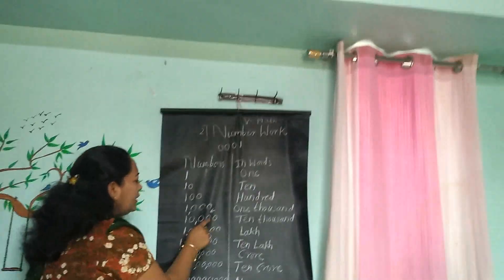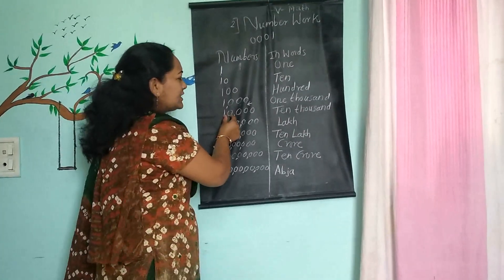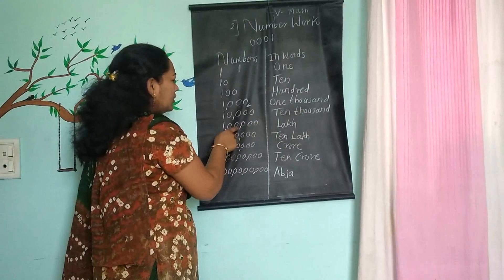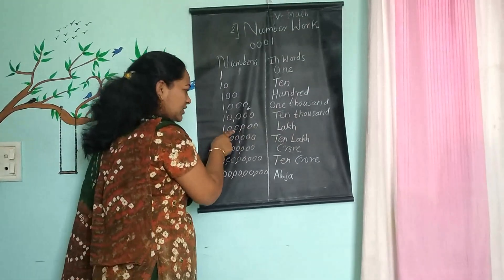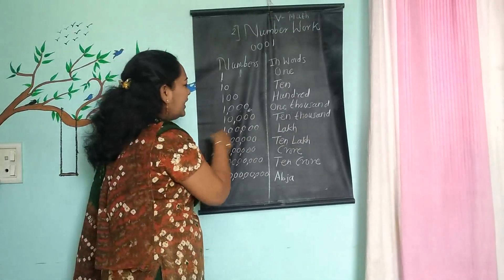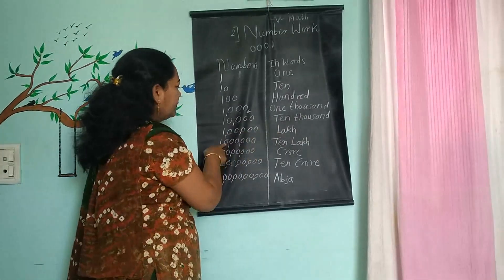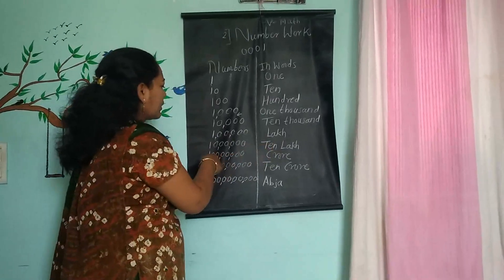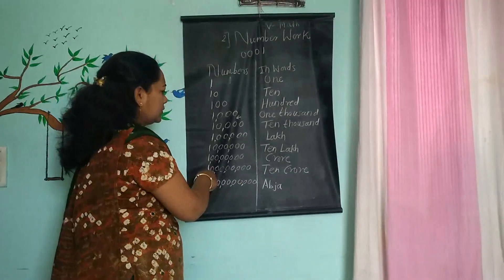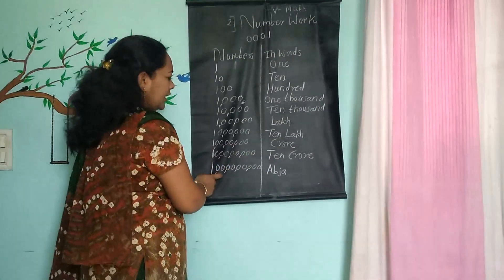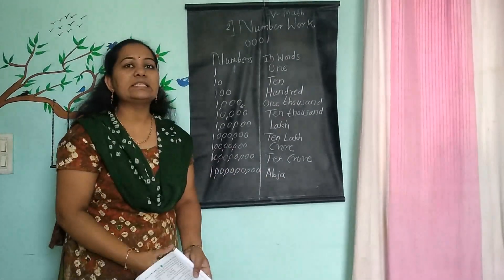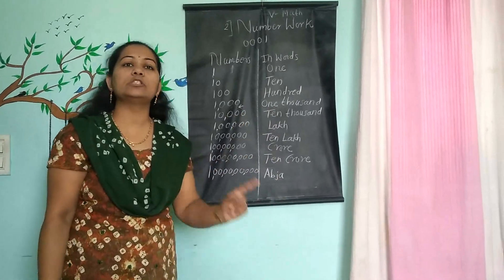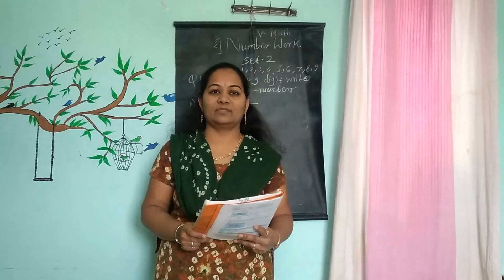So 10,000 is written as 1,2,3 comma 10. Then continuing: 1 lakh is 1,00,000. 10 lakh. 1 crore. 10 crore. And 1 abja. These are the numbers. Have a look and write this chart also as a short note in your notebook.